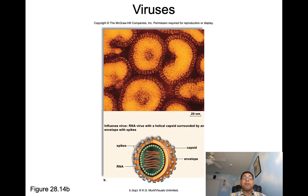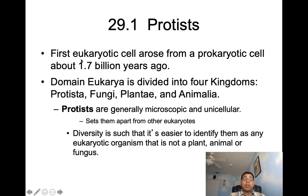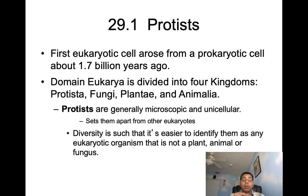Let's move to protists and fungi. The first eukaryotic cell arose from a prokaryotic cell about 1.7 billion years ago. The domain Eukarya is divided into four kingdoms: Protista, Fungi, Plantae, and Animalia. Protists are generally microscopic and unicellular, which sets them apart from other eukaryotes. They can be unicellular, colonial, or multicellular, and are structurally diverse. Their diversity is such that it's easier to identify them as any eukaryotic organism that is not a plant, animal, or fungus.